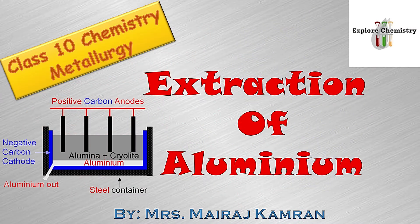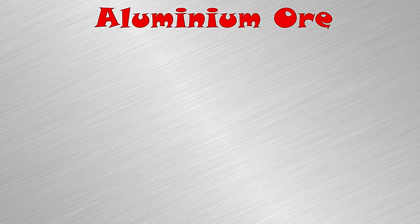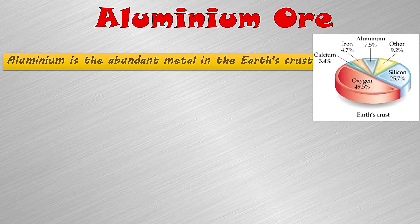Assalamu alaikum and hello everyone, this is Miraj Kamran and you're watching Explore Chemistry. Today we are going to study about extraction of aluminium. This is a very important topic related to metallurgy. We will see how aluminium is extracted from its ore. Let's start — the aluminium ore used for this purpose is bauxite.